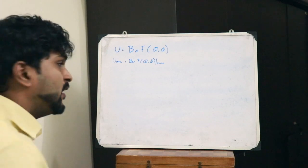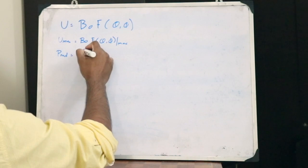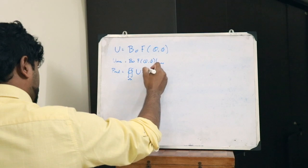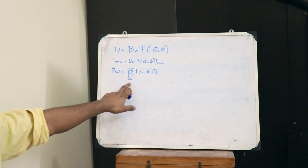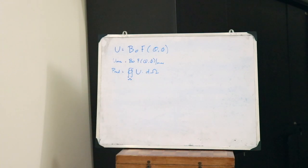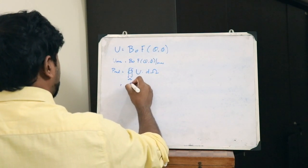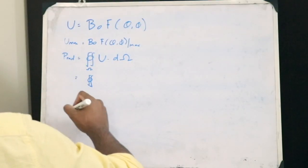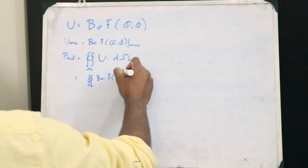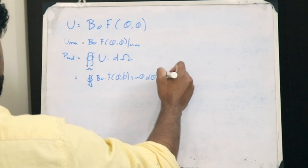The power radiated by an antenna, P_rad, can be written as the double integral of B0 f(θ, φ) sin θ dθ dφ.